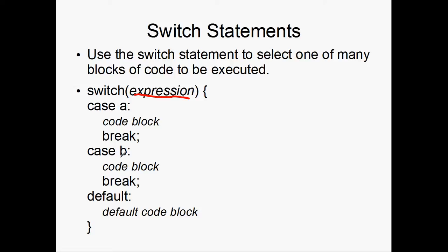So let's say the expression matches A. Then the code block underneath A between the semicolon and the break will execute. Let's say that the expression matches B. Well, the code block between B and break will execute as well. And let's say that neither case matches up with the expression. It'll simply jump to the default. And note that the default is actually optional. You don't need to have it every time you program, but it's a good way to error check and check all your bases.